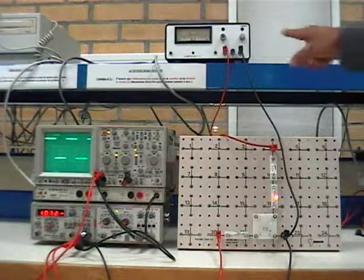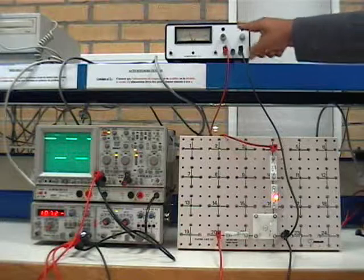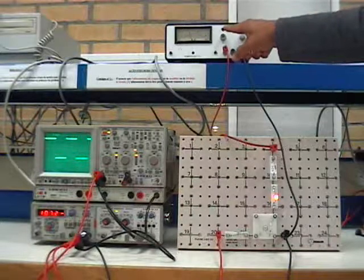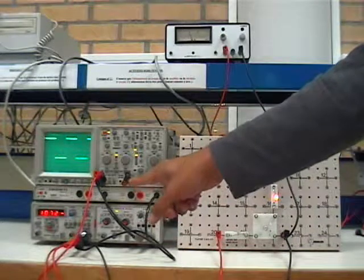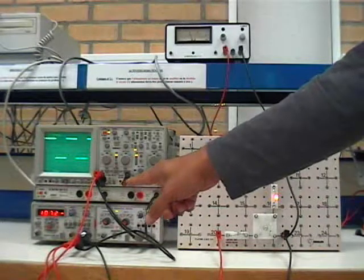Alright, the DC power supply, the voltage is equal to 10 volts. The function generator, the frequency is about 1000 hertz.